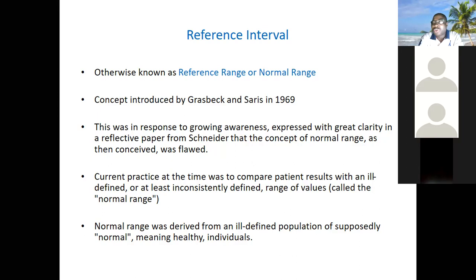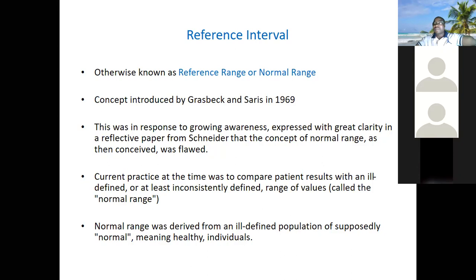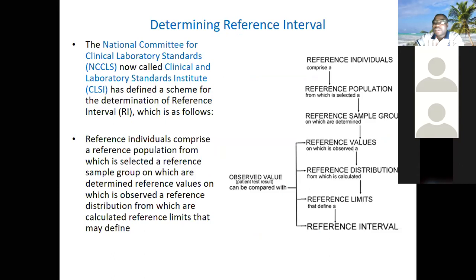Most health workers can be classified as middle class, while most patients are lower class. Demographically, health workers cannot represent the whole population, so using samples from health workers to represent the normal range for the whole population is flawed. That was why some people came up with the concept of reference interval. Even today, reference interval, reference range, and normal range mean the same thing, but the original conception of 'normal range' was argued to be flawed.